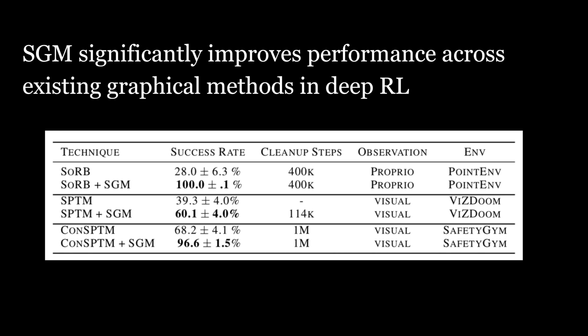We experimentally show that our method improves robustness of plans. Sparse graphical memory can be coupled to any existing graphical methods in deep RL and results in significant performance gains, increasing the success rate of existing methods by 30 to 60 percent.